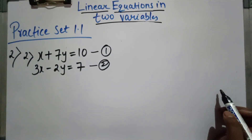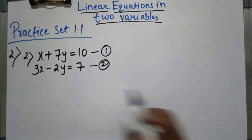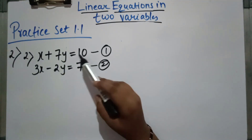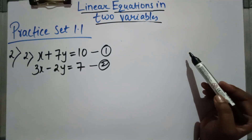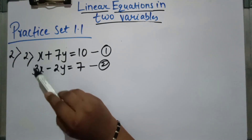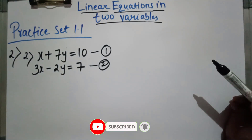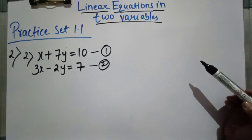Now, what we need to do is make sure that one variable's two coefficients are the same. We can make the x variable's coefficients equal, or we can make the y variable's coefficients equal. We need to multiply equation 1 by 3.